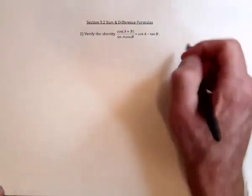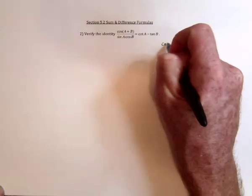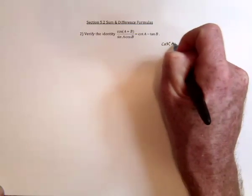On the left-hand side, I need the identity for cosine of a plus b. So let's see, cosine of a plus b.